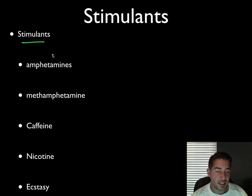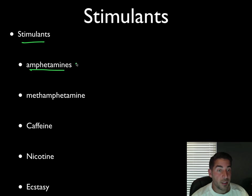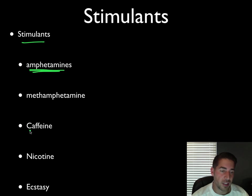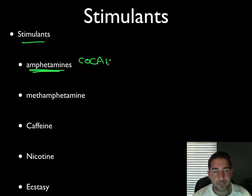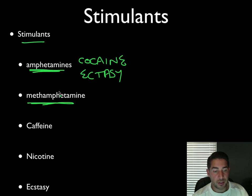The opposite of a depressant is a stimulant. A stimulant excites neural activity and speeds up your body functions. Amphetamines are a type of stimulant — more powerful than caffeine. Examples include cocaine and ecstasy. Methamphetamine is chemically produced amphetamine — this is your speed or crystal meth. It is very highly addictive and reduces your body's naturally occurring dopamine, which is one of your pleasure neurotransmitters.